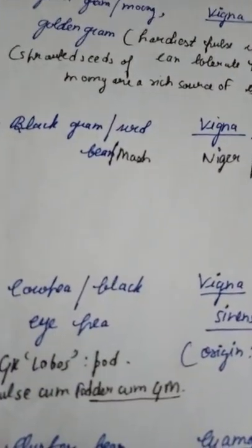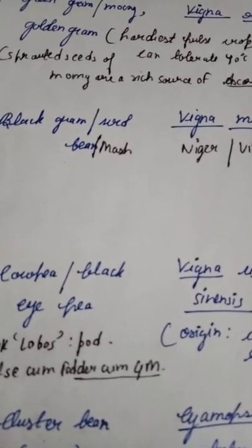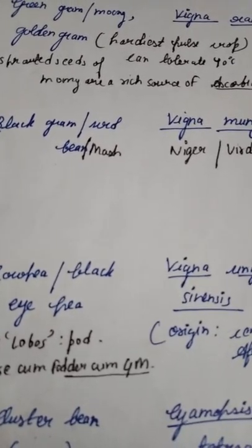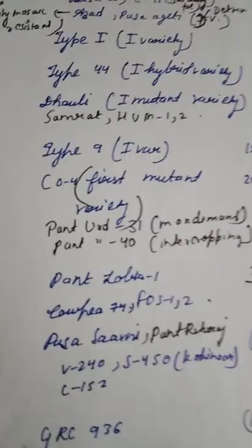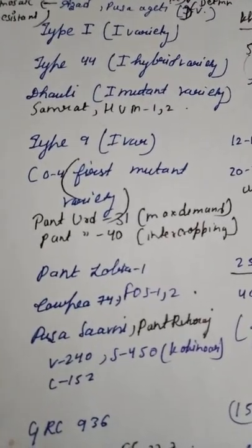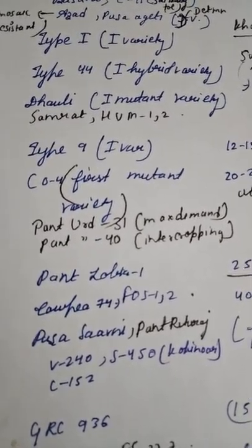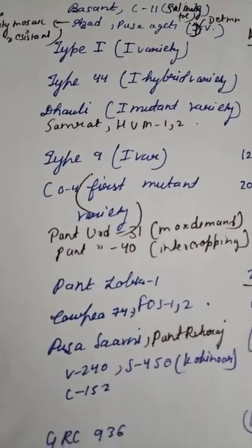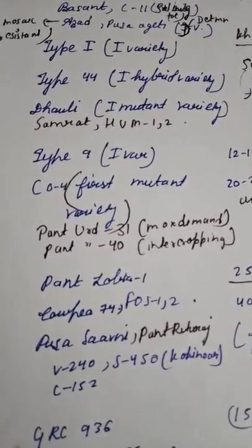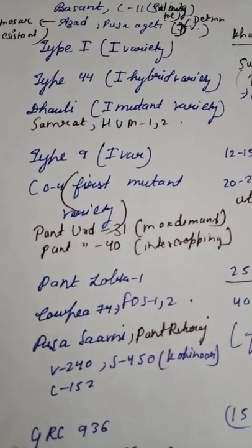Black gram, urad, urd bean, and mash — these are all the same crop. Scientific name of black gram is Vigna mungo or Phaseolus mungo. Type 9 is the first variety of black gram. CO4 is the first mutant variety of black gram or urad. Pant Urad 31 is in maximum demand. Pant Urad 40 is used in intercropping.